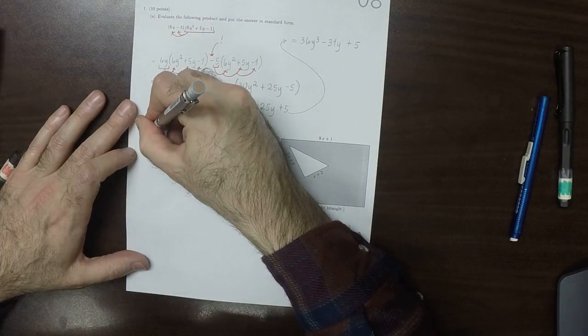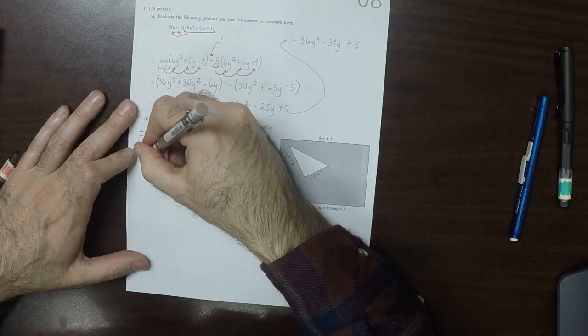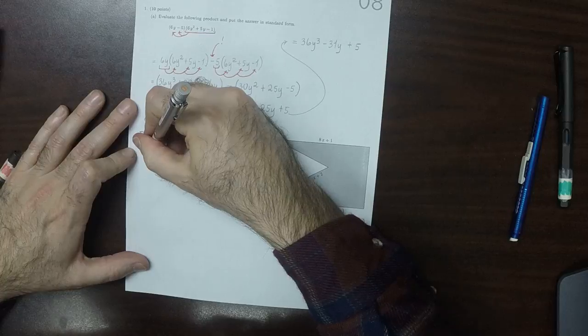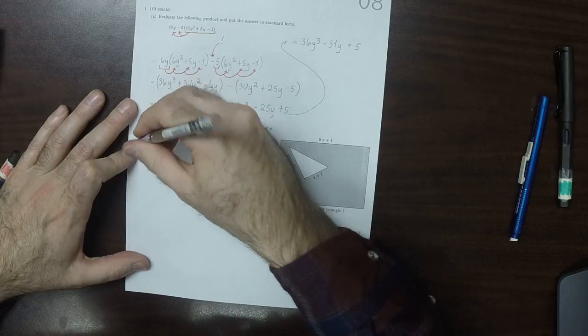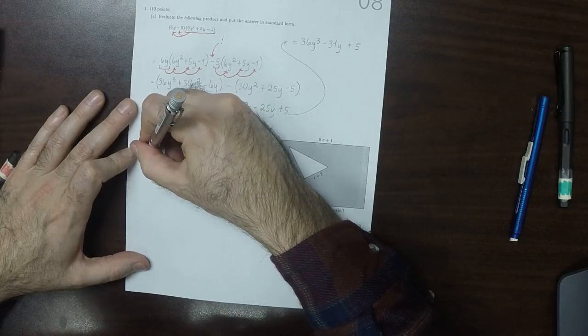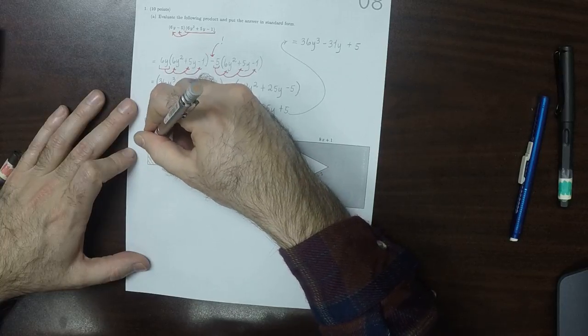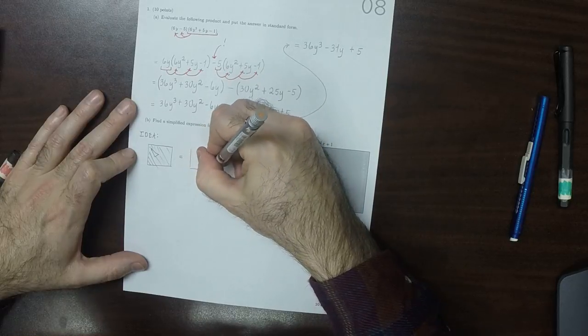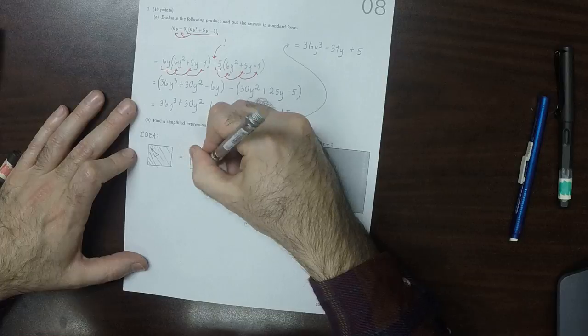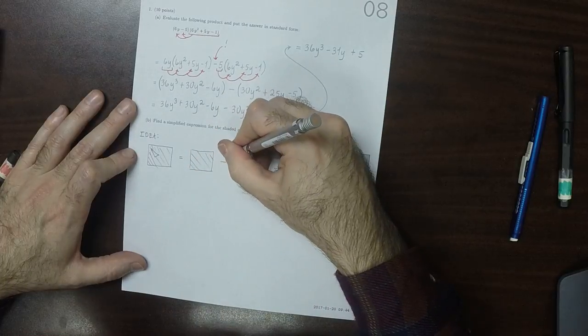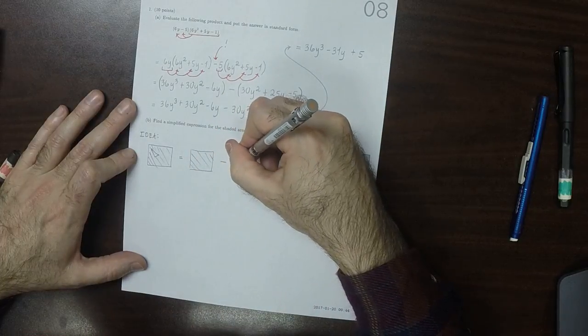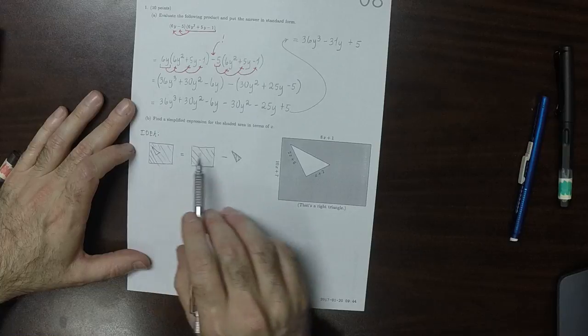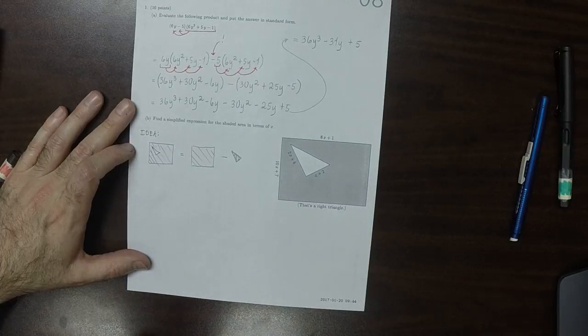The main idea is that we're trying to find a region that looks like this, shaded like so. So the area will be the area of the whole rectangle, and then minus the area of that triangle. So that's the area we're looking for. It will be the difference of those two areas.